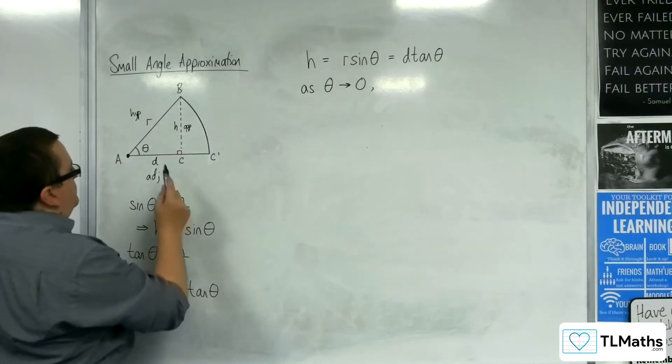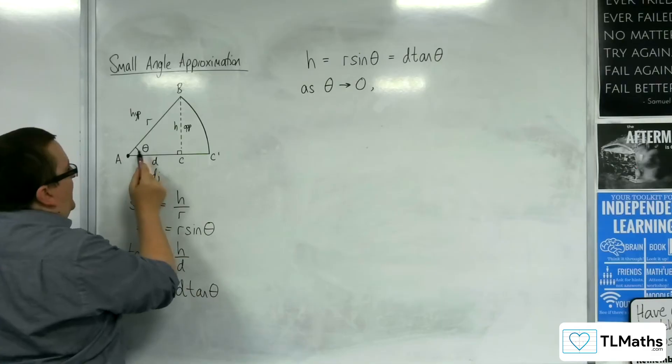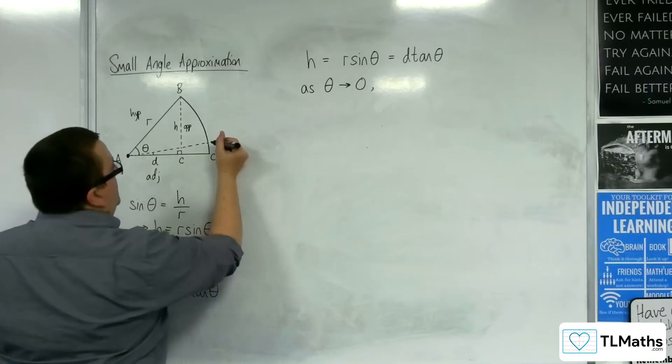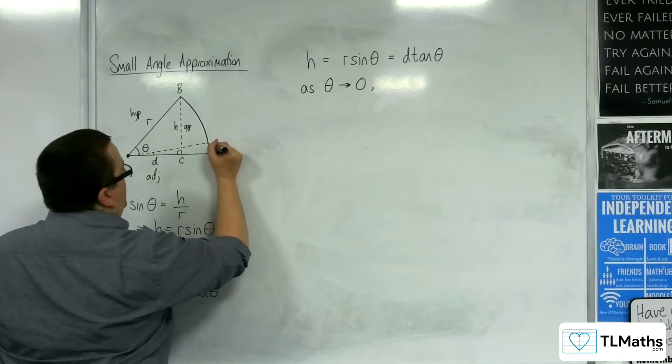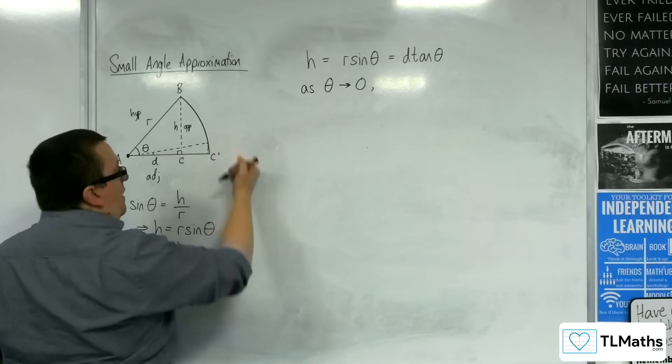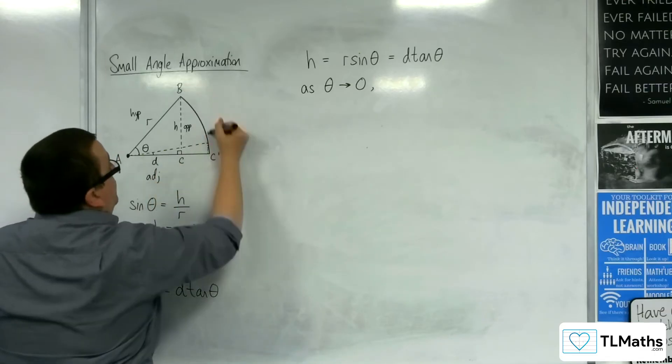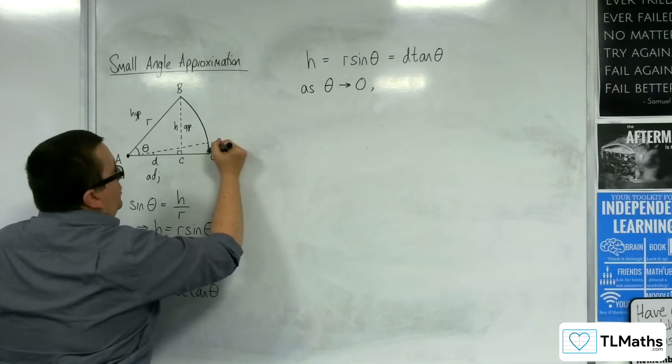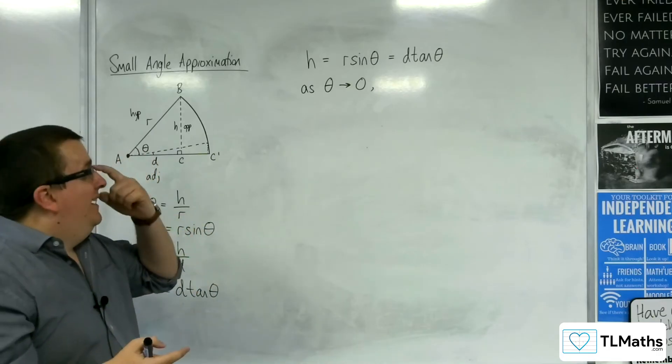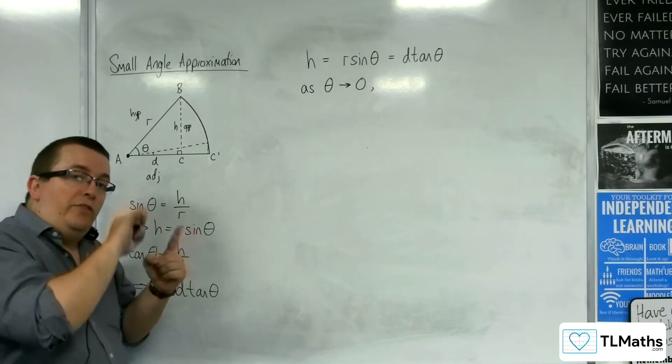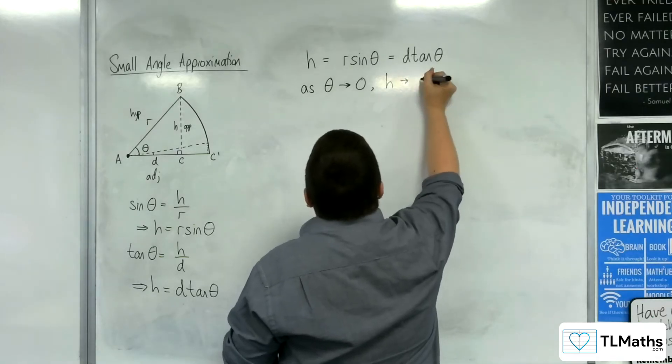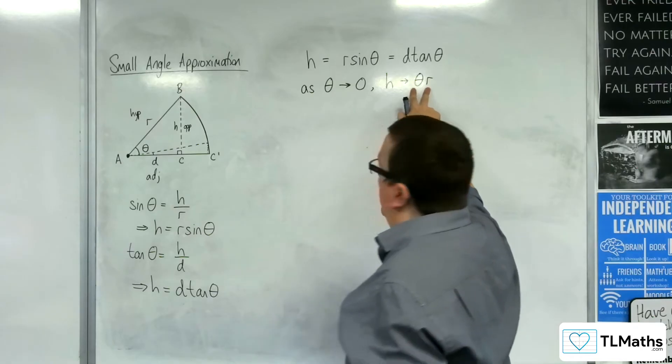So what you can imagine is that as theta gets smaller, so let's say we've got to this point, theta's now just that length. H is now this vertical line here. So you can see that it's actually getting closer to being the length of the arc from where B would now be to C prime. So that vertical distance is now getting closer to the length of the outside of the sector. Now the arc length of a sector is given by theta times R. So that means that H is approaching theta times R, the arc length of a sector.